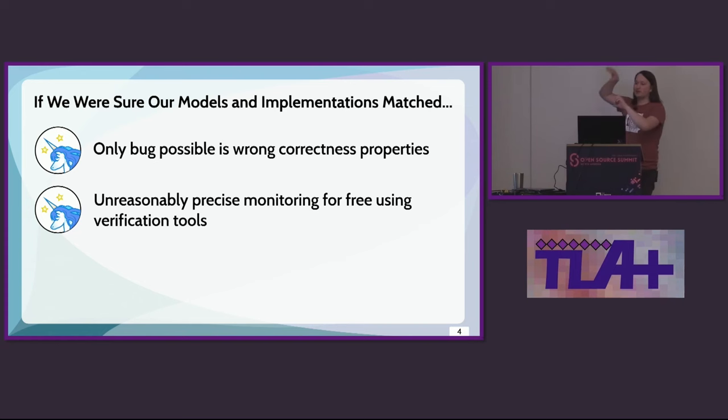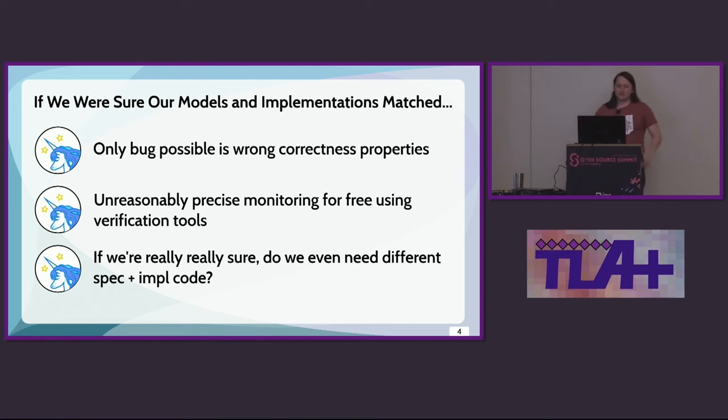If our models and implementations matched perfectly and we had somehow magical assurance that this was true, then the only bug possible would be wrong correctness properties. Now that sounds wrong and in most real cases it is wrong, but think in the Kool-Aid for a second. And yeah, that could kind of happen. Also, if we know that our model is exactly representative of what's really happening, you have all these unreasonably precise monitoring tools. Like normally monitoring is relatively vague and sort of ad hoc based on what kind of visibility tools you need. But technically, if your model matched your implementation exactly, you have your entire spec as monitoring, which is pretty neat. And that's foreshadowing for some of the things I'll be talking about. And lastly, if you really get in there and blur the lines, do we even need different specification and code at that point? Can't I just hit run on my specification and just deploys and works? I mean, that sounds kind of unrealistic, but it's a nice idea in principle.